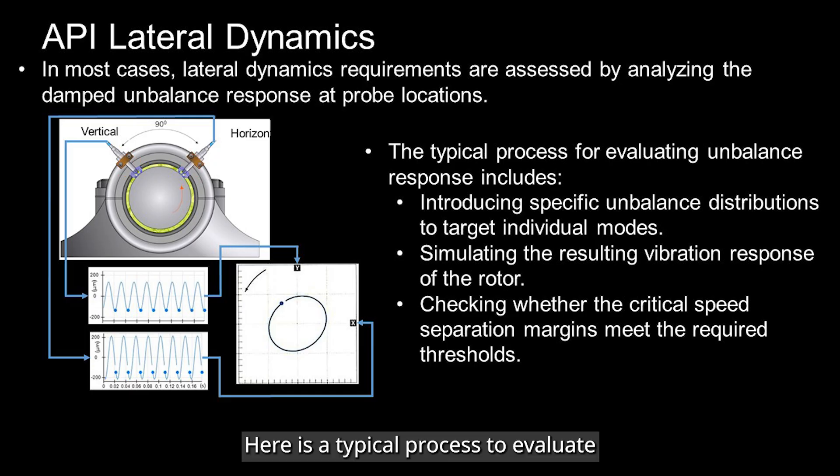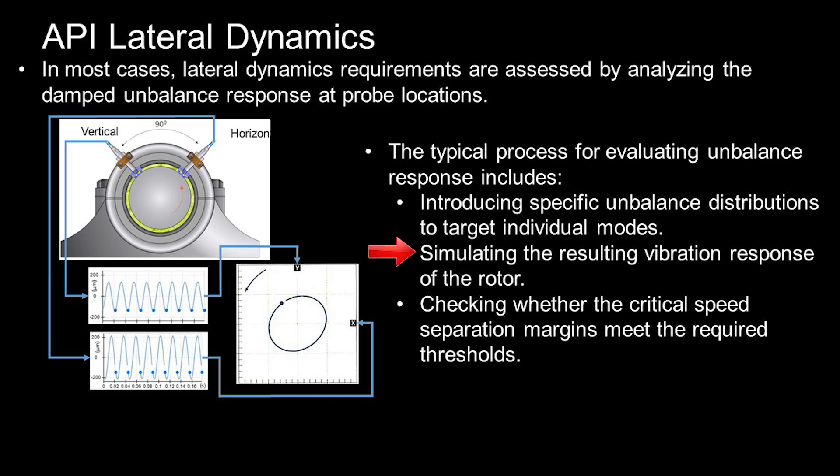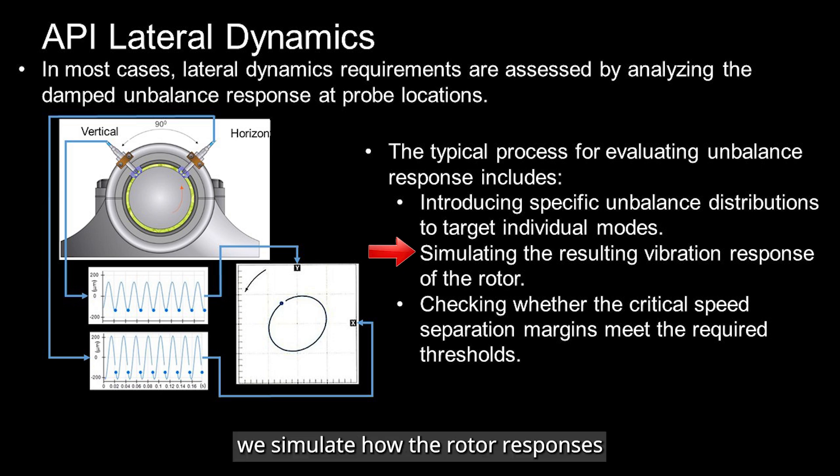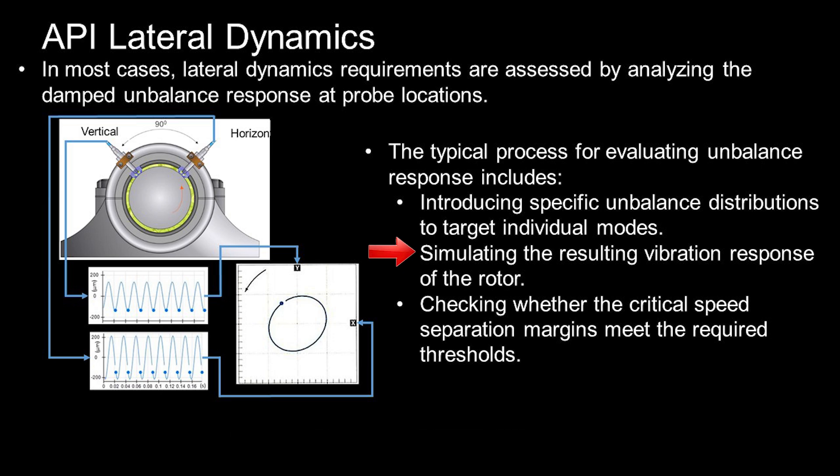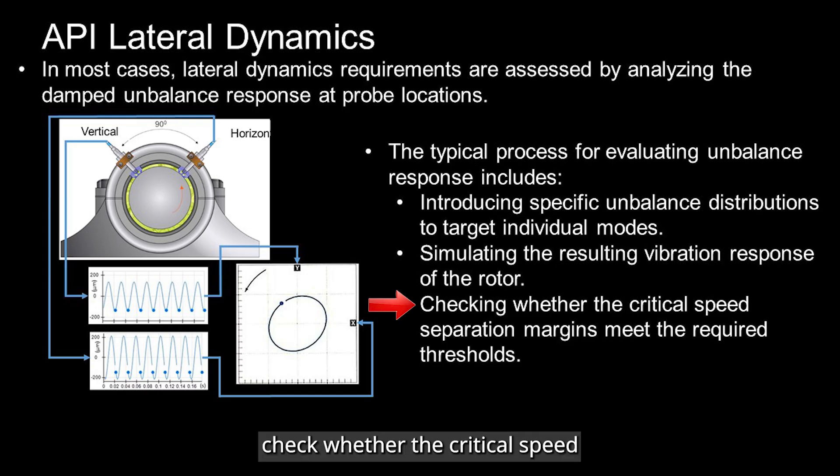Here is a typical process to evaluate imbalance responses. First, we introduce specific imbalance distributions to target individual modes of the rotor. Next, we simulate how the rotor responds in terms of vibration. And finally, we check whether the critical speed separation margins meet the required thresholds.